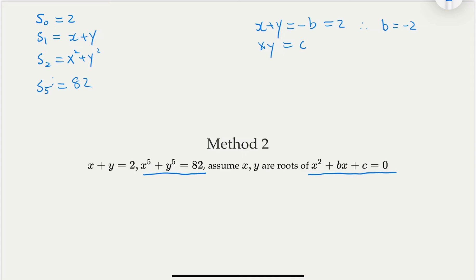So recall the recurrence relationship is s_n equal to negative b times s_(n-1) minus c times s_(n-2). That's what we get. So in this case, b is negative 2, so negative b becomes 2 times s_(n-1) minus c times s_(n-2).